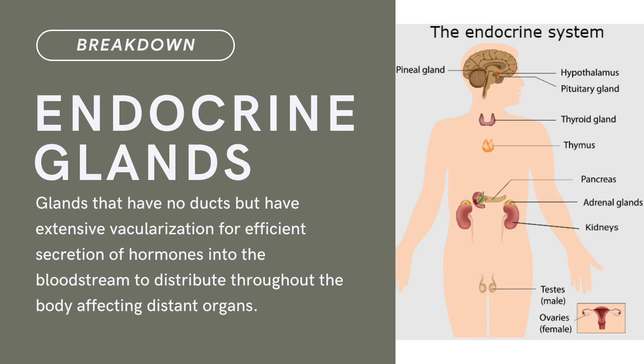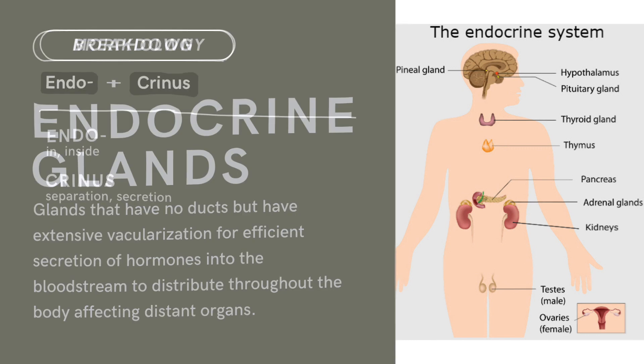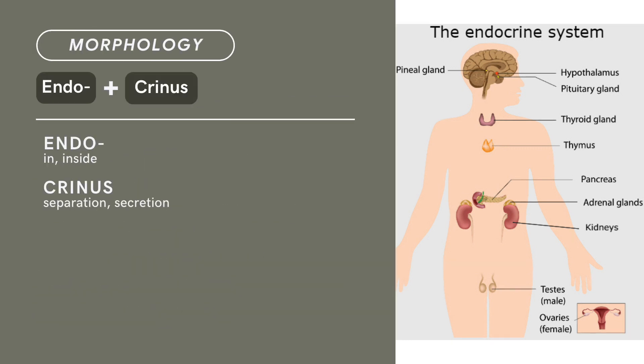Compound term: endocrine glands. Brief definition: glands that have no ducts, but have extensive vascularization for efficient secretion of hormones into the bloodstream to distribute throughout the body, affecting distant organs. Term morphology: compound of endo- plus crinus. Endo- means inside; crinus means separation or secretion. There you have it — compound term: endocrine glands.